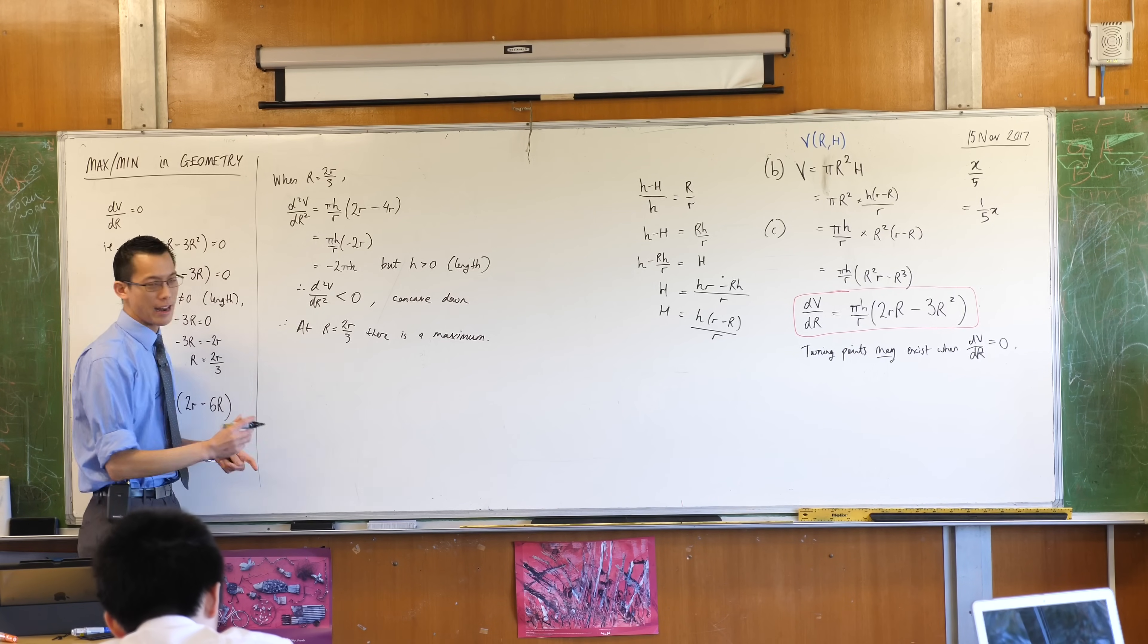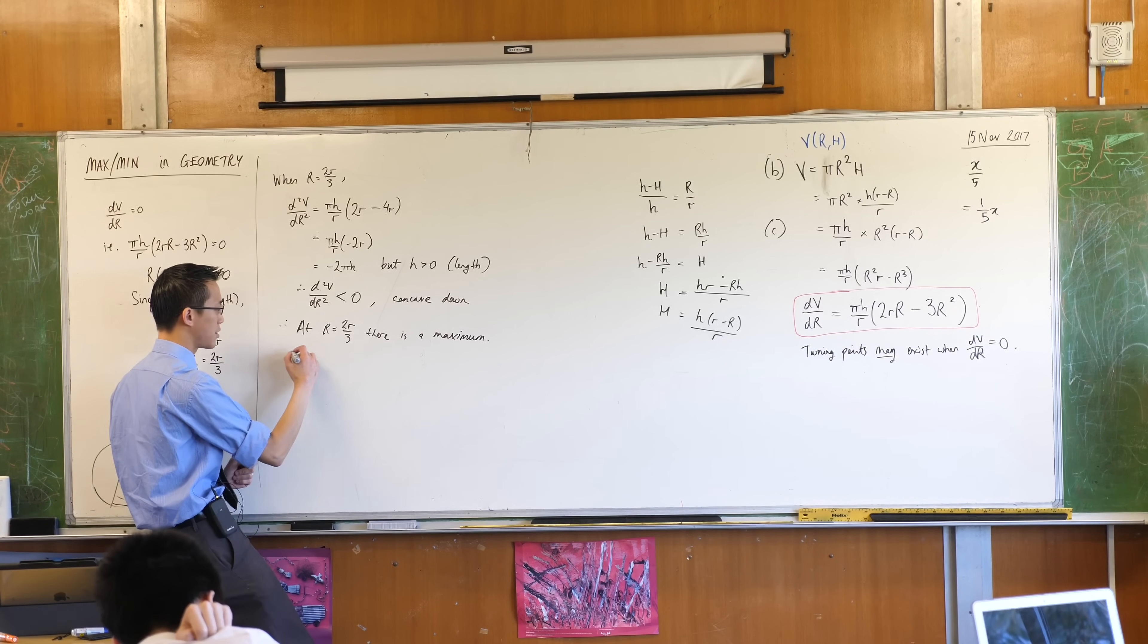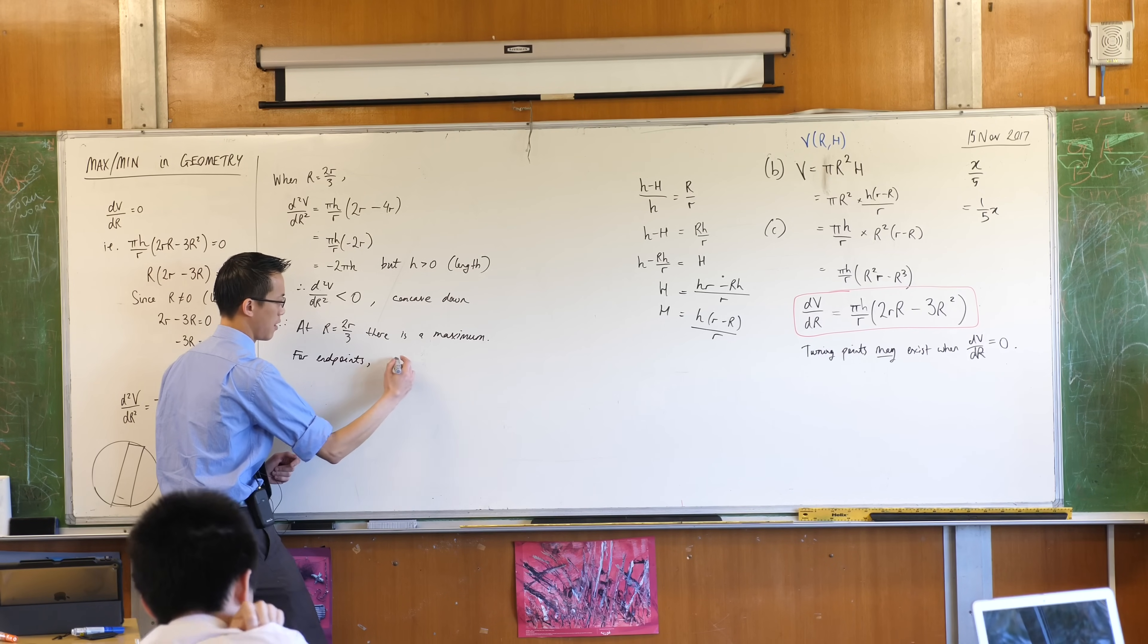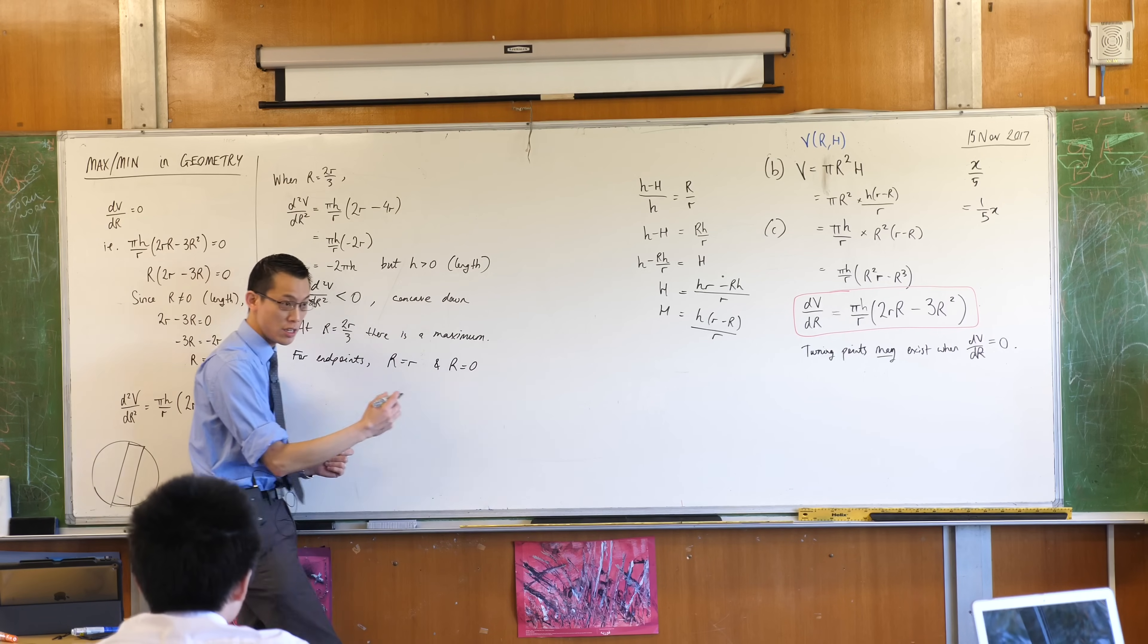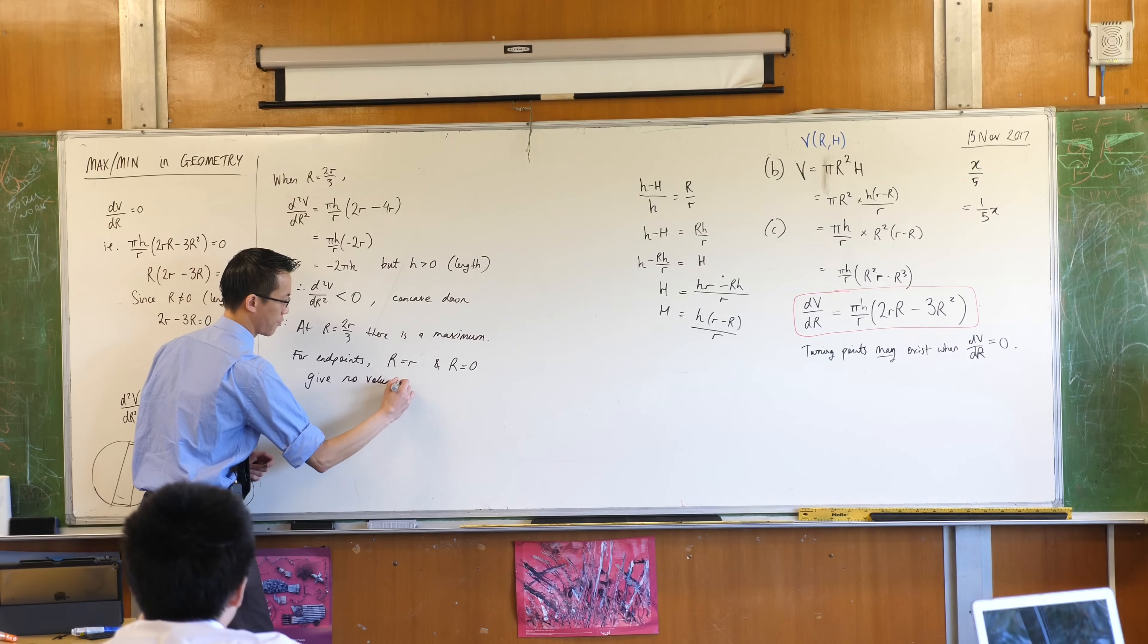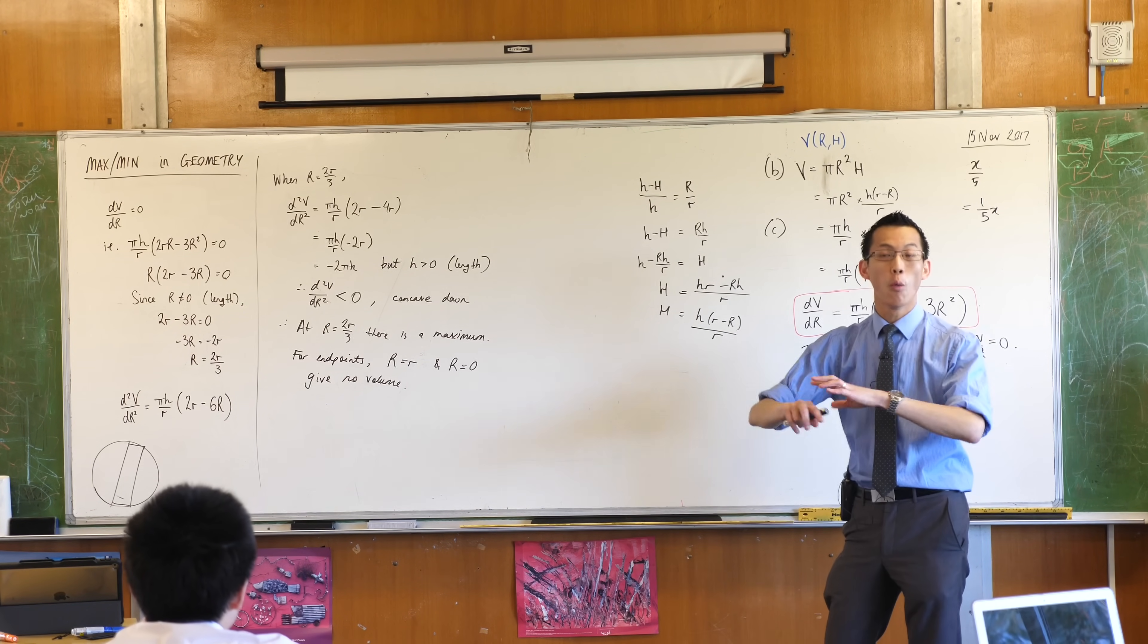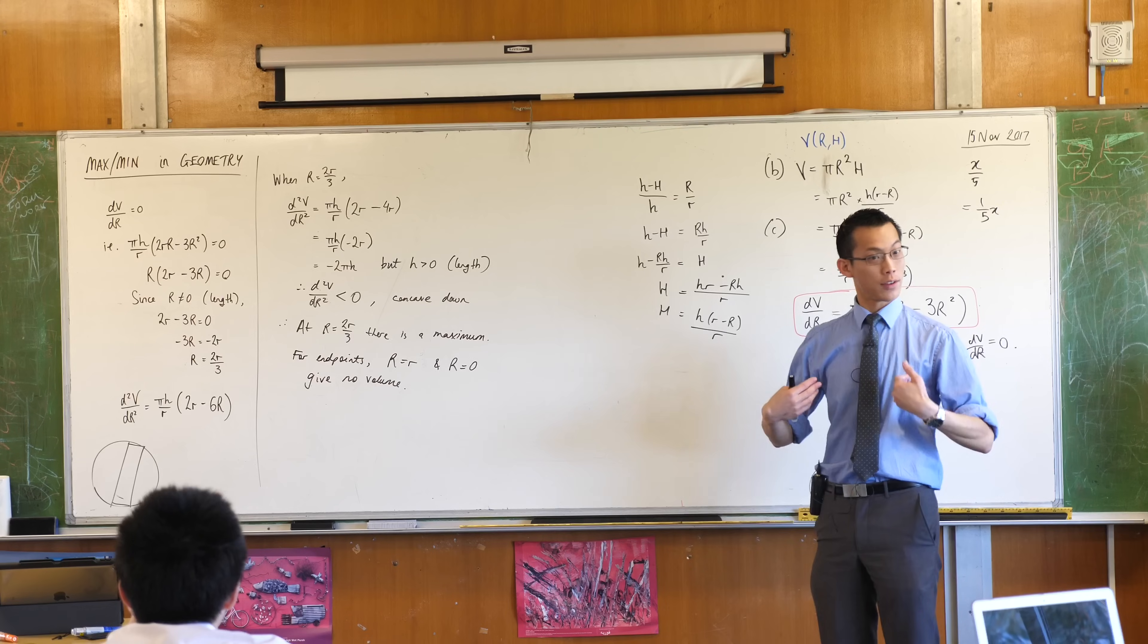So, in this case, I can actually ignore my endpoints. If you wanted to say it, and I don't think you need to, but it's probably nice in this archetypal example that we say it. So, I would say for endpoints, R equals R and R equals zero give no volume. So, I don't think you really need to worry about saying that. Like, you would not lose a mark if you didn't say that. But I like to say it because I want to make sure I'm always looking out for endpoints. Just like I'm always looking out for a domain restriction because I often forget those.